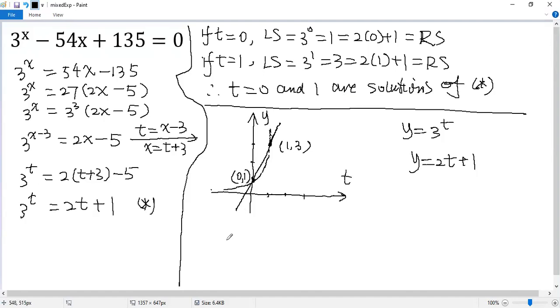Finally, we can get back to x. So x equals t plus 3. When t equals 0, we get 3. When t equals 1, we get 4. So they are the solutions of the given equation.